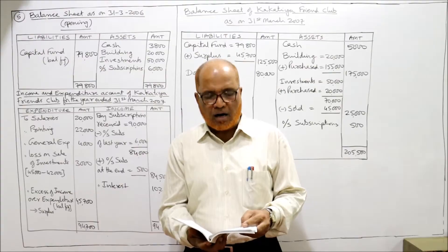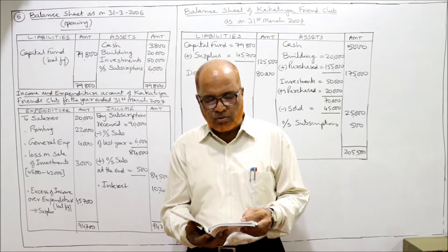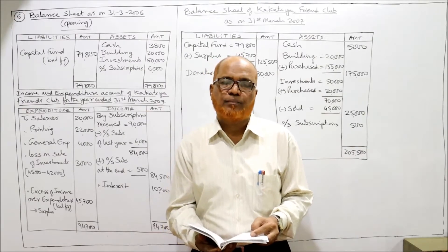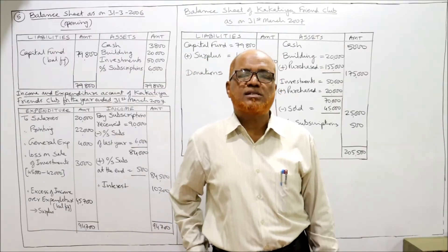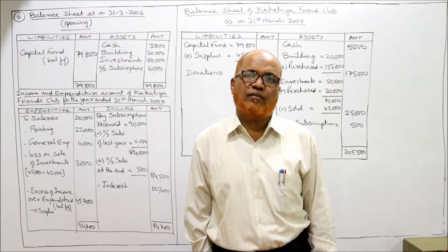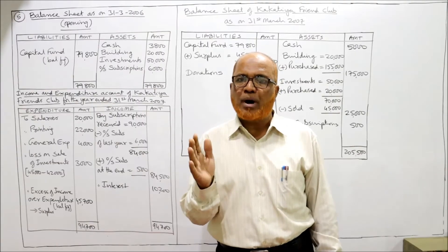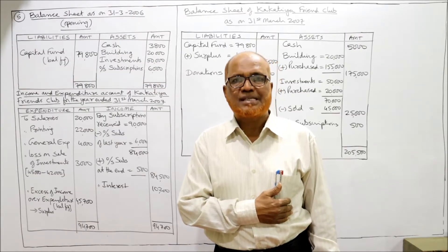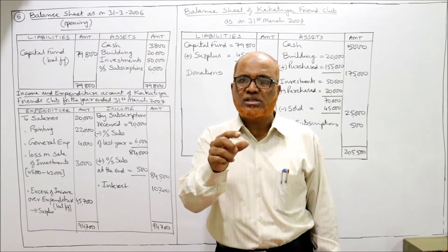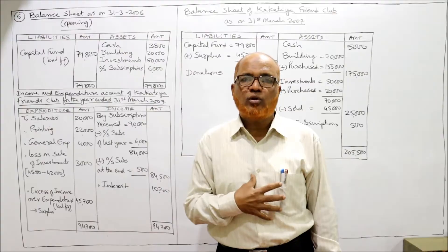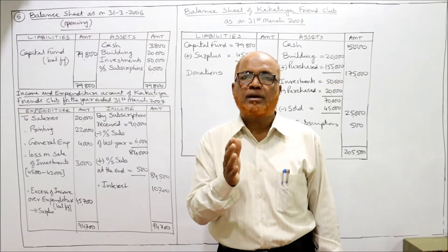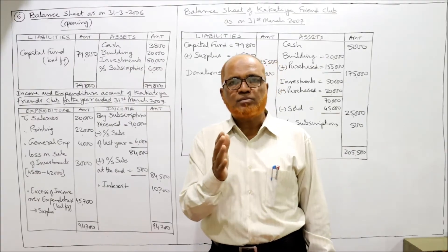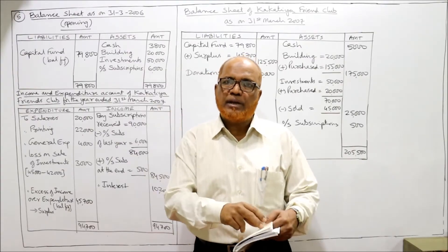The additional information gives opening balances: building 20,000; investment 50,000; outstanding subscription 6,000. We need to find the capital fund at the beginning of the year, so we make an opening balance sheet as on 31st March 2006.